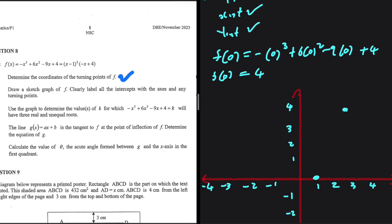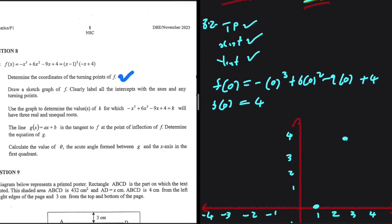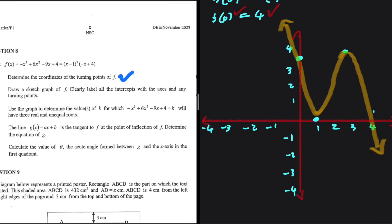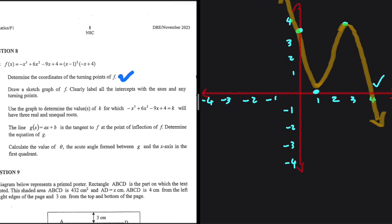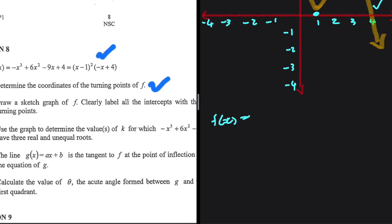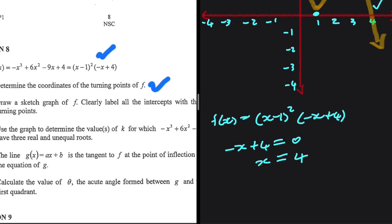There is another x-intercept at x = 4. f(x) can also be written as (x - 1)² × (-x + 4). Setting -x + 4 = 0 gives x = 4. So we have x-intercepts at x = 1 and x = 4, and a y-intercept at y = 4. We are done sketching the graph.